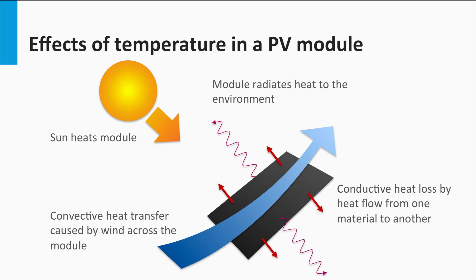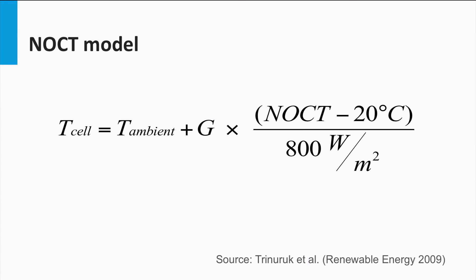Fortunately, there is a model provided in literature that gives a reasonable estimate of the module temperature as a function of the ambient temperature. This model is sometimes called the NOCT model due to the use of the nominal operating cell temperature or NOCT of the PV cell or module. The NOCT is a parameter defined for a particular PV module. NOCT is the temperature attained by the PV cell under an irradiance of 800 watts per square meter with a nominal wind speed of 1 meter per second and an ambient temperature of 20 degrees Celsius. Here G is the irradiance at the instant when the ambient temperature is T-ambient. The model gives the corresponding cell temperature as T-cell.